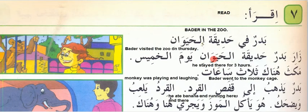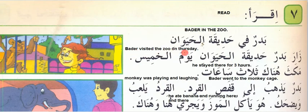This is the second part video of lesson number 14: 'Badr fi hadiqatul haywan' — Badr is in the zoo or animal's garden. 'Zara Badrun hadiqatul haywan yawmul khameez' means Badr visited the zoo on Thursday. 'Zara' means visited. 'Makasa honak salas saat' means he stayed there three hours.